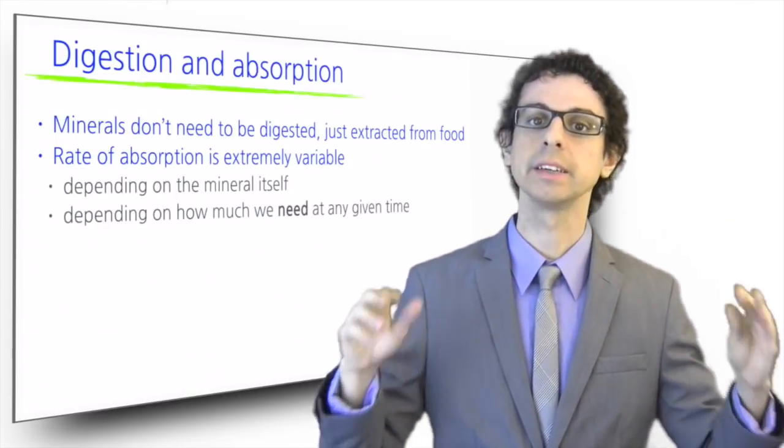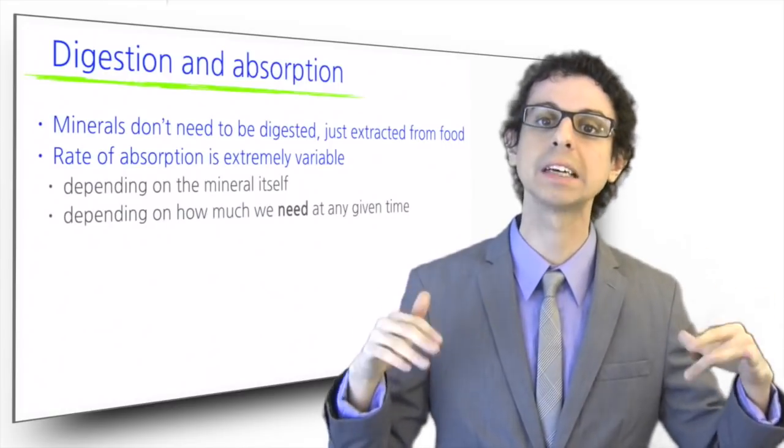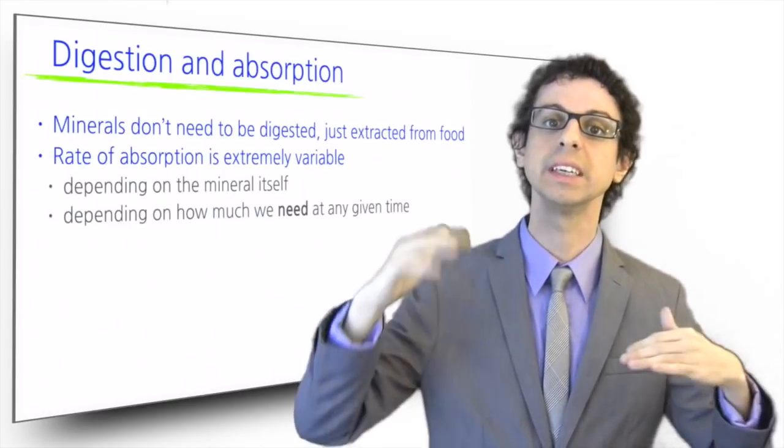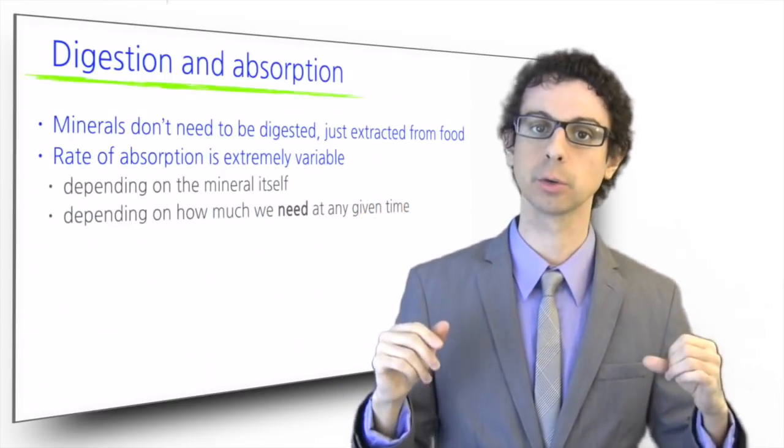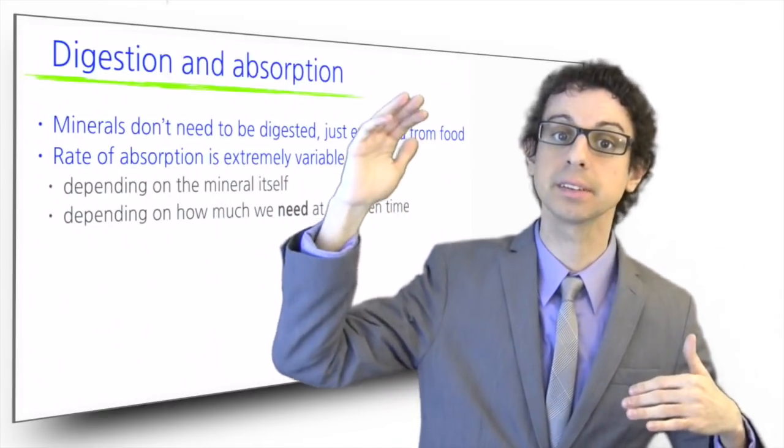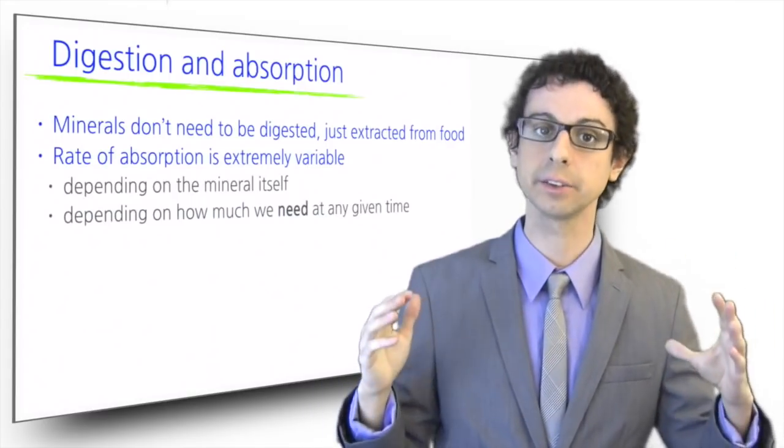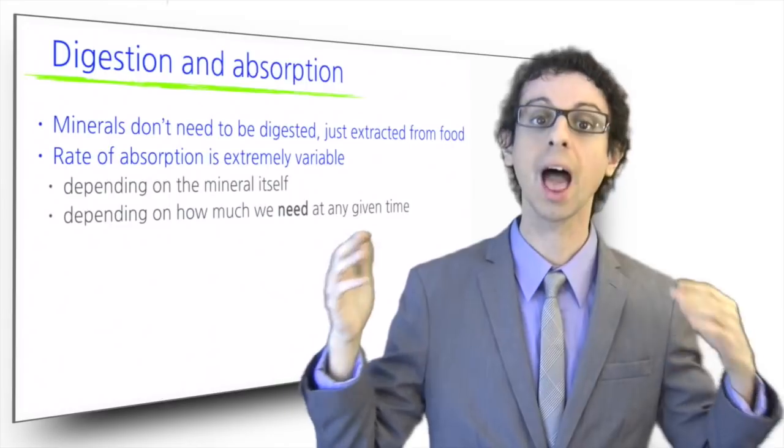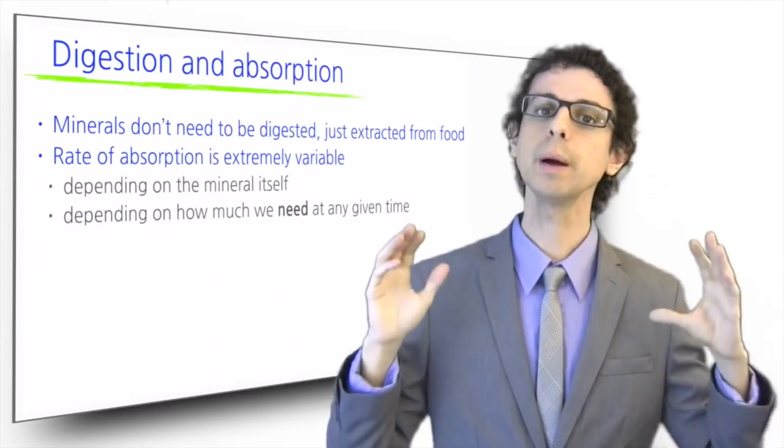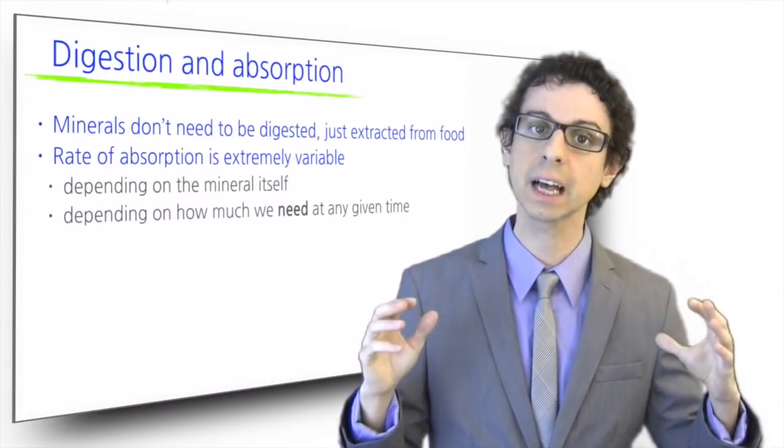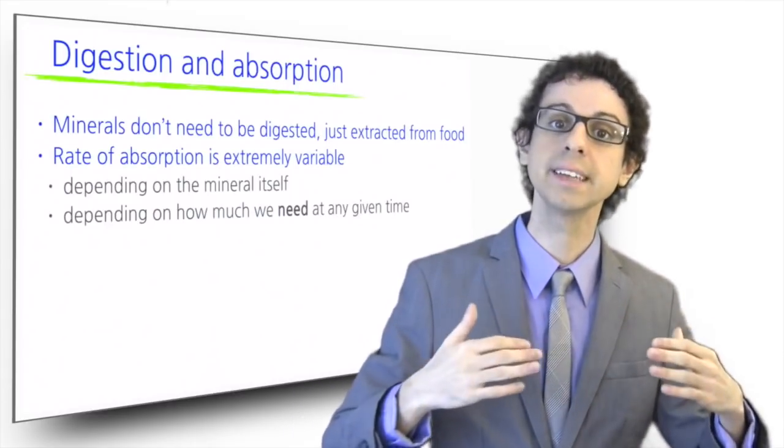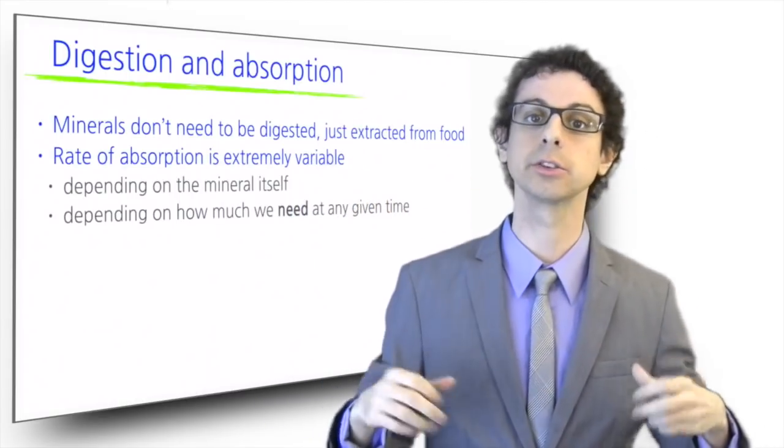Mineral absorption, however, is also highly variable depending on how much we need. When the body needs more, intestinal absorption increases. For example, calcium absorption is on average 25%, but can go as high as 60% if our needs are increased. Vice versa, when we're getting too much from food, our absorption decreases to try to prevent toxicity. Do you remember the experiment by Jackson and colleagues on zinc absorption? When they gave less and less zinc to a group of volunteers, their intestine absorbed more and more zinc in order to compensate.